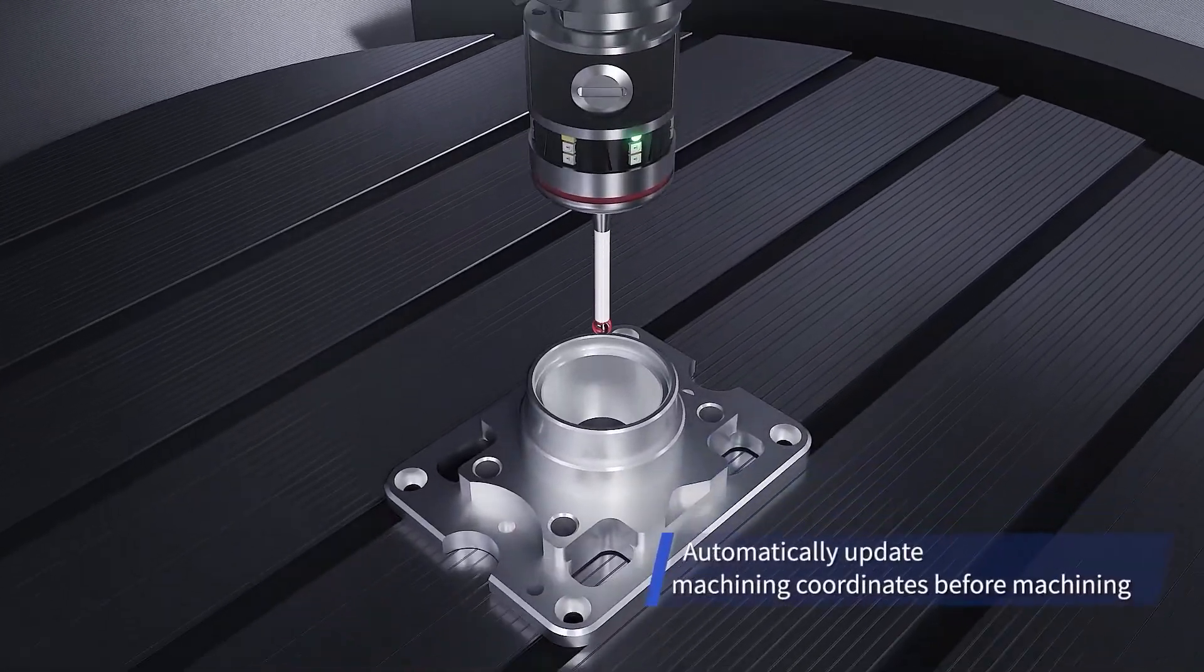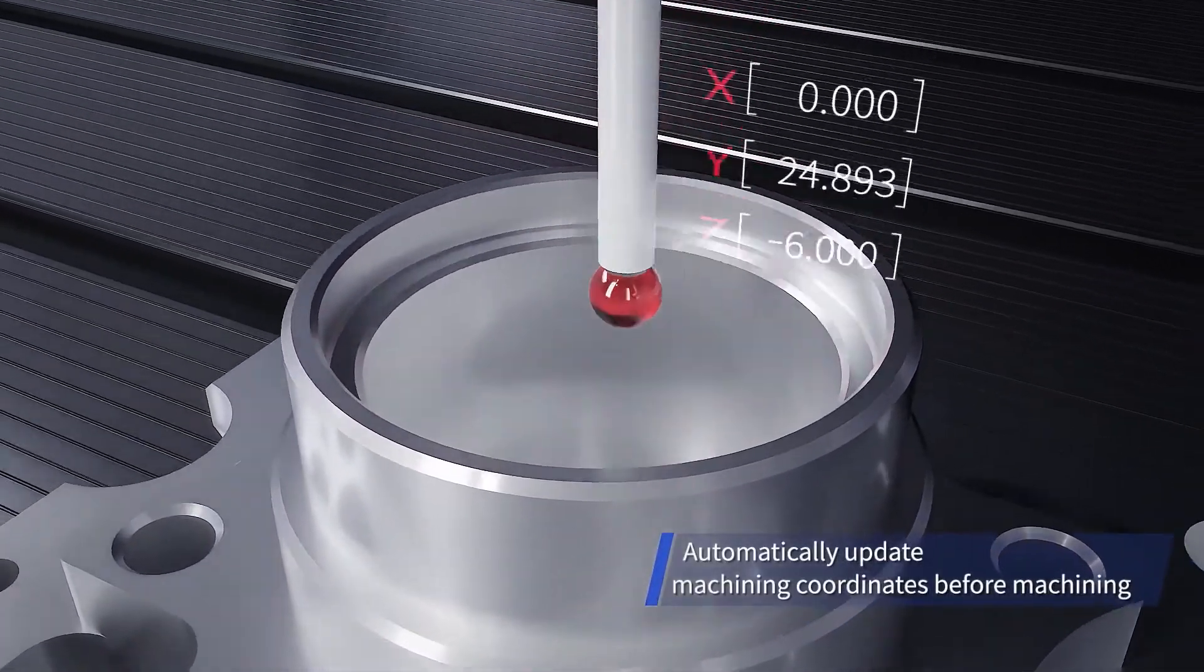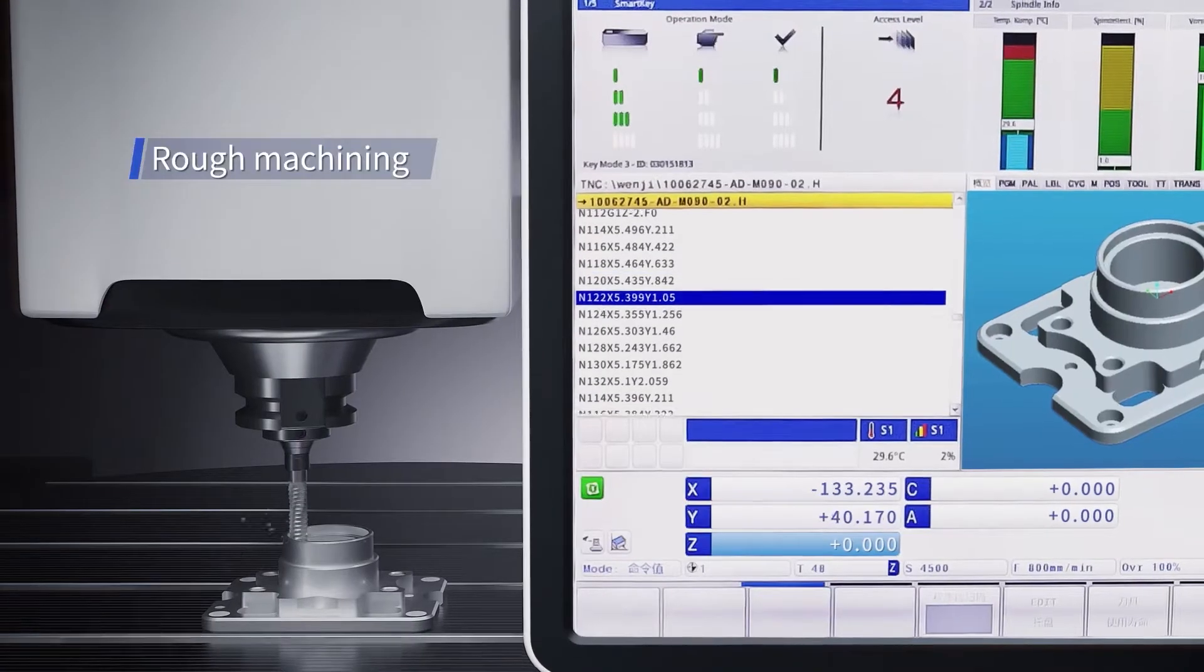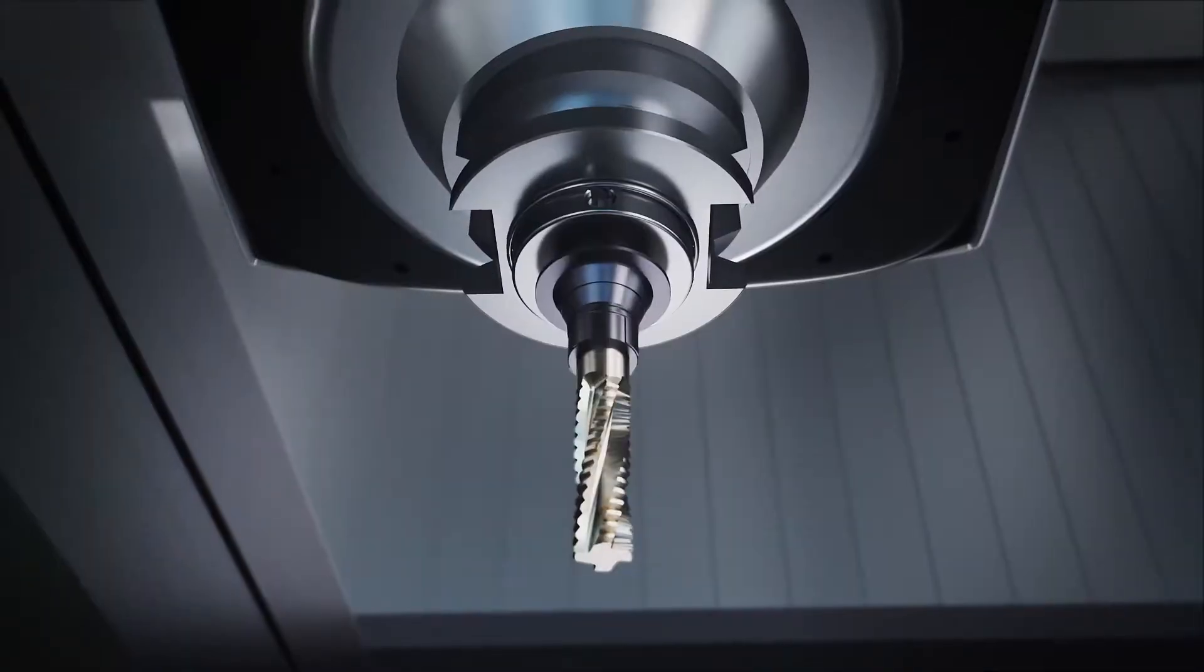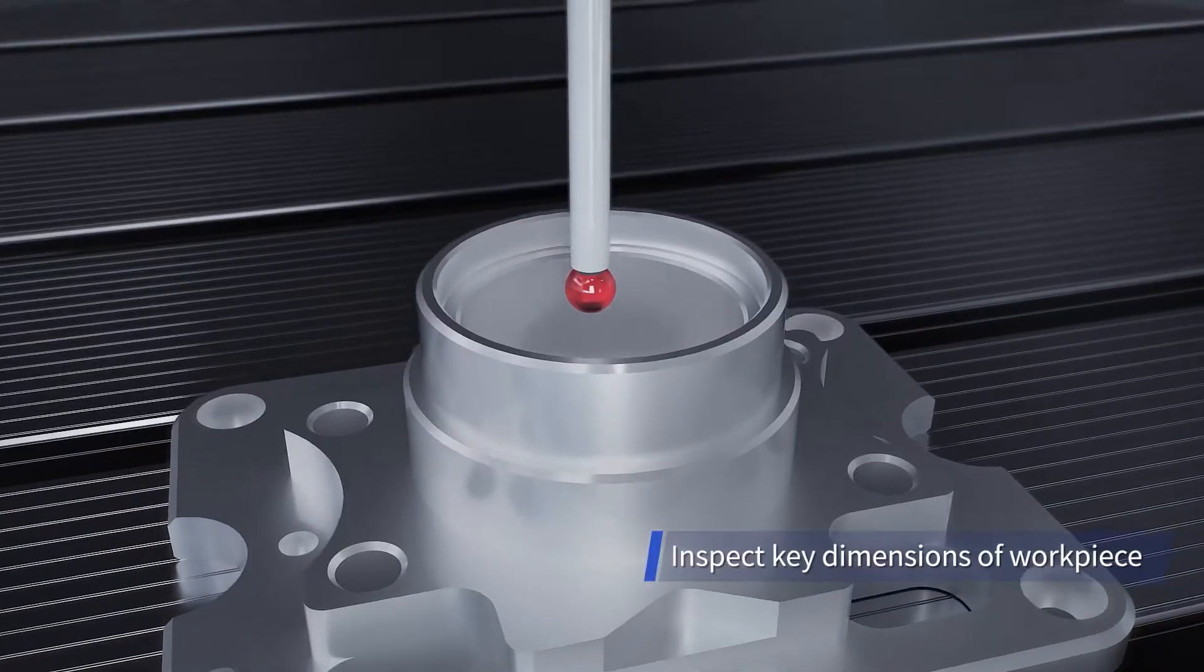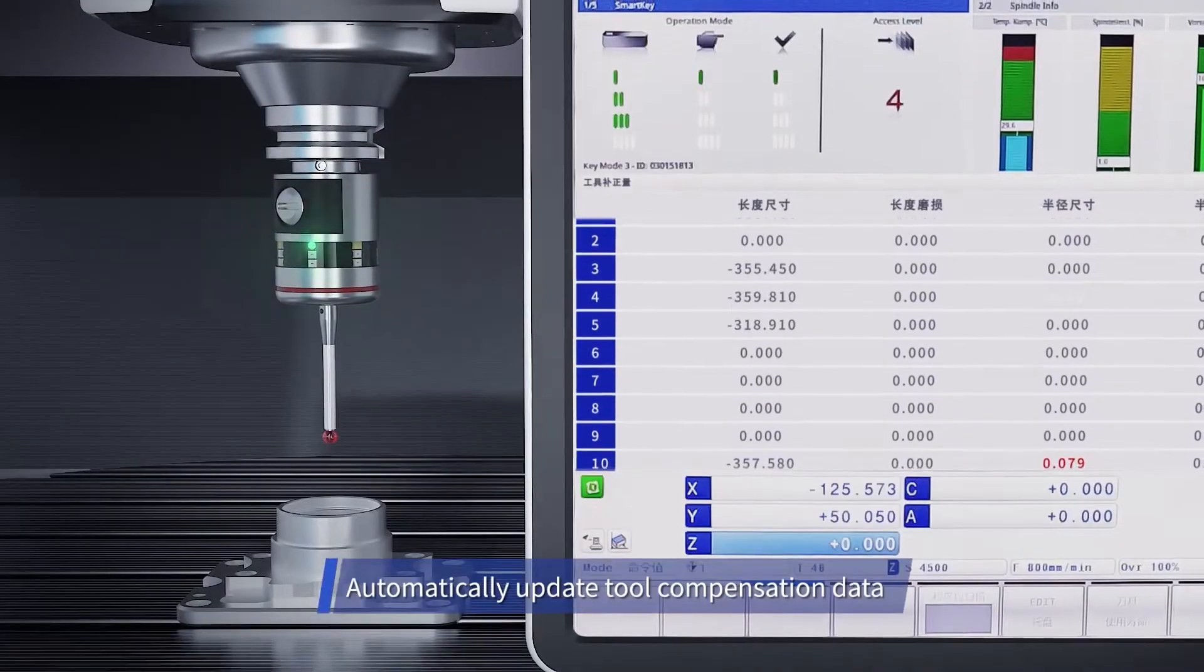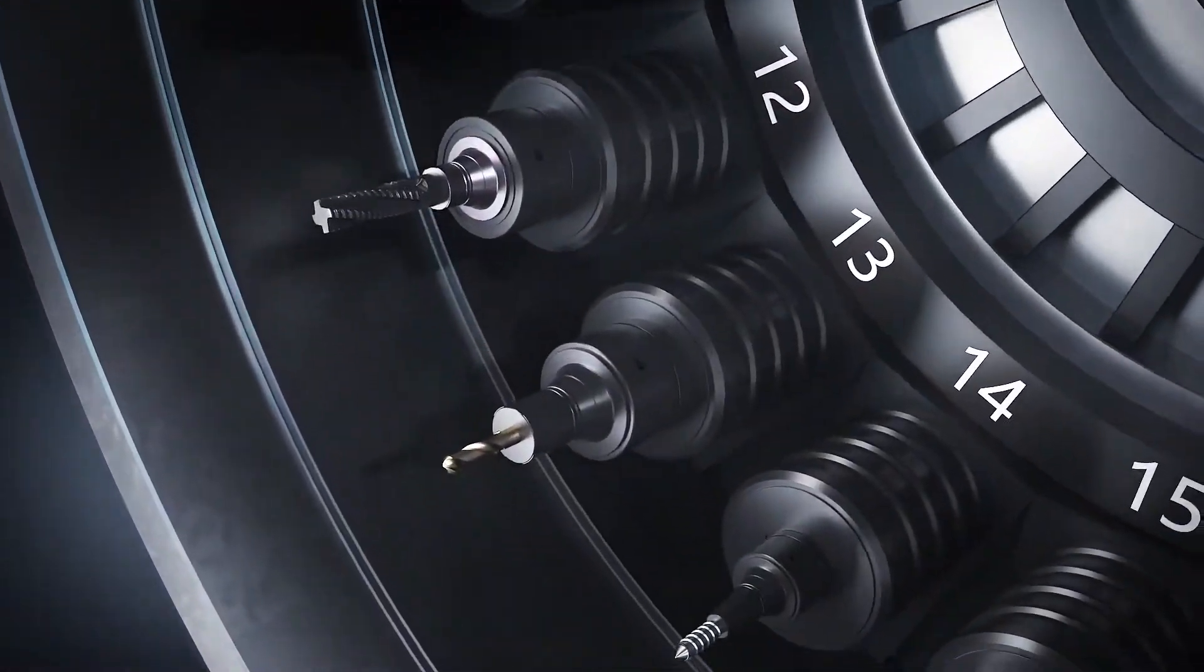Before the workpiece is machined, the probe is used to measure actual sizes. Deviation data between measured values and nominal values are calculated rapidly. Then these data are automatically compensated to subsequent machining process to ensure consistent machining sizes.